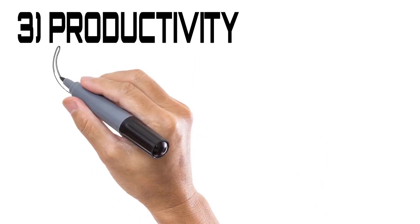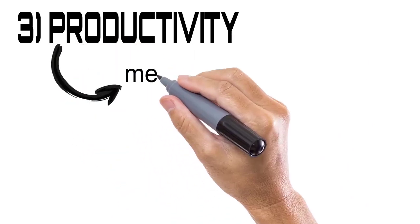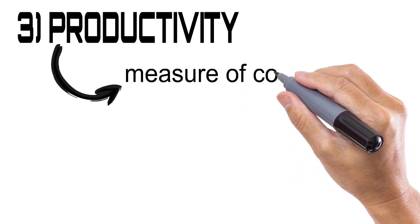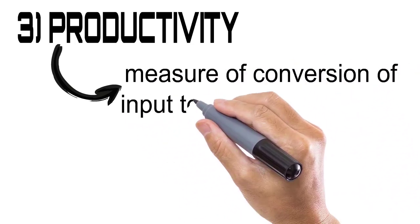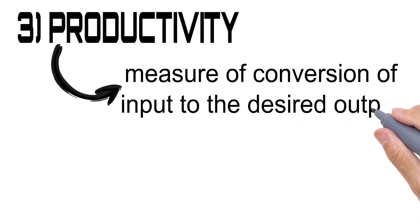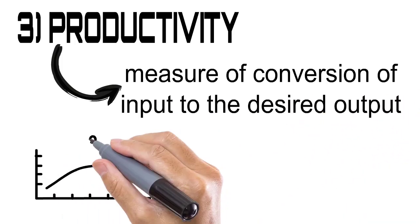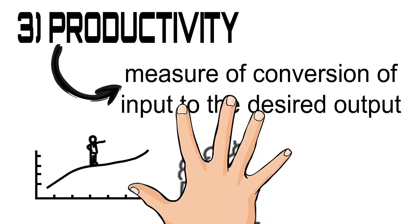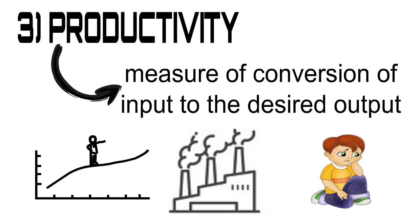What is productivity? Productivity is the measure of conversion of input into desired output. Take the example of a factory again — the input put into the factory is flour, butter, and sugar, and how efficiently the factory converts that input into the desired output, which is biscuits.